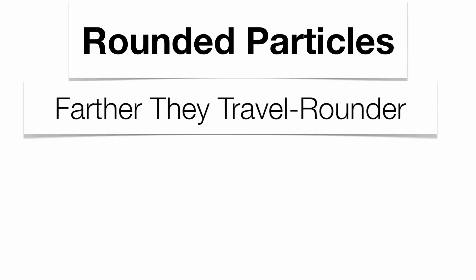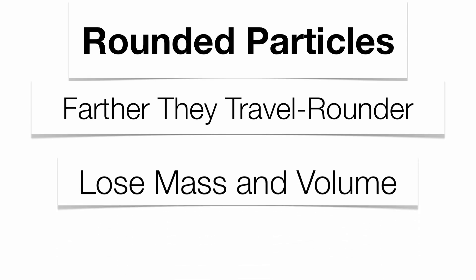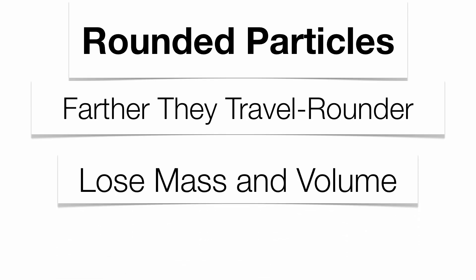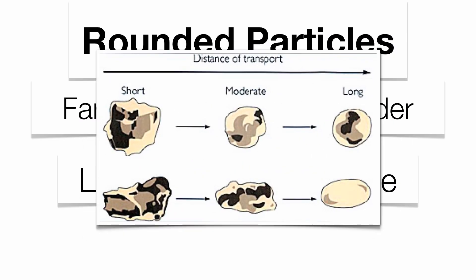Particles tend to get rounded the farther they travel. Those rounded fragments will give you an idea in terms of how far they might have traveled over their lifetime. These particles are going to lose a little bit of mass and volume because the angled fragments get rounded out. Particles on the left-hand side of the picture are somewhat angled with no definitive shape. The longer they travel, the more rounded they become, so you can see the distance of transport depicted there.